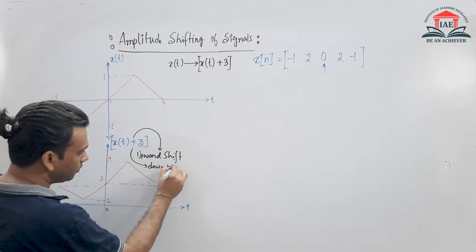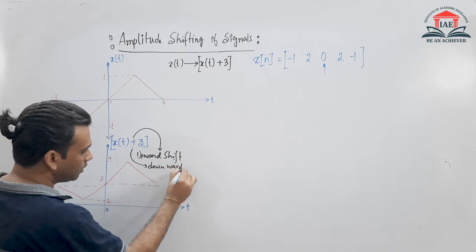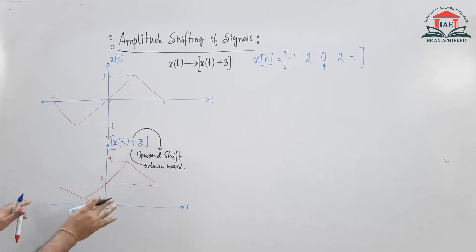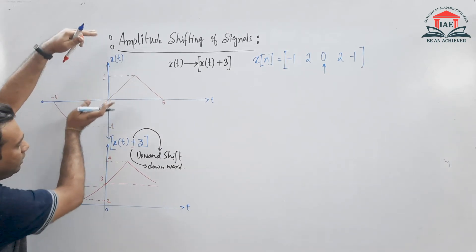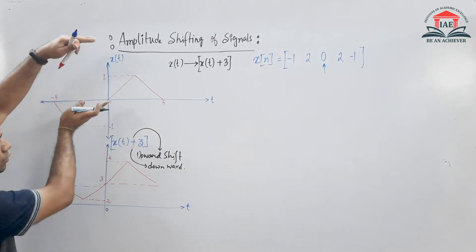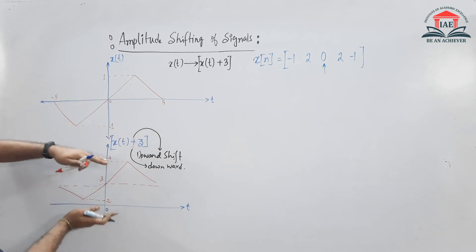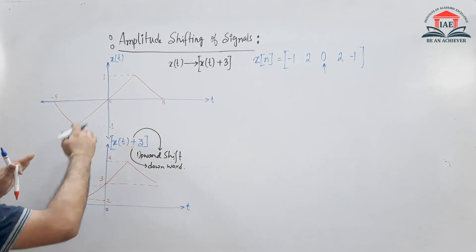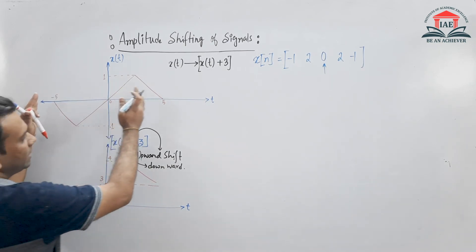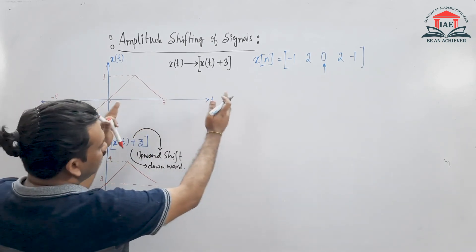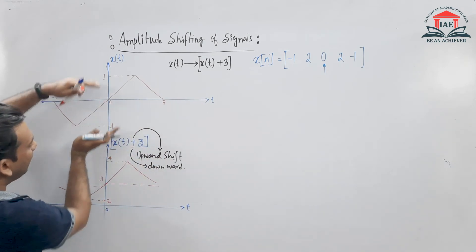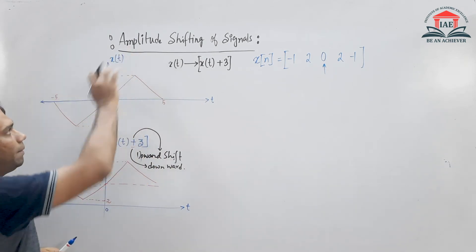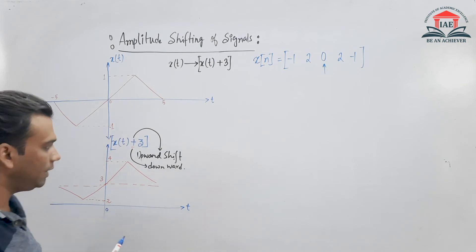So amplitude shifting has two cases: positive value gives upward shift, and negative value gives downward shift. In time shifting, the signal shifts along the time axis. But here, the signal only shifts up and down. This is called amplitude shifting.